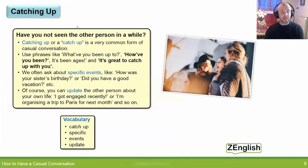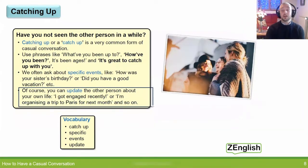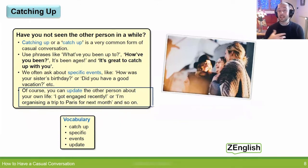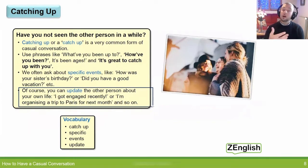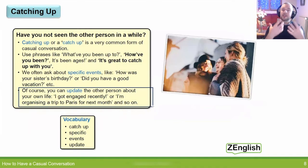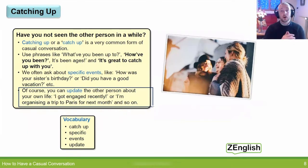As well as asking about the other person, it's also useful to update them about your own life — tell them what's been happening with you since they last saw you, any important events. For example: 'I got engaged recently', or 'I'm organizing a trip to Paris next month'. Anything that's new and relevant — and hopefully they will also ask questions and help get that conversation moving.